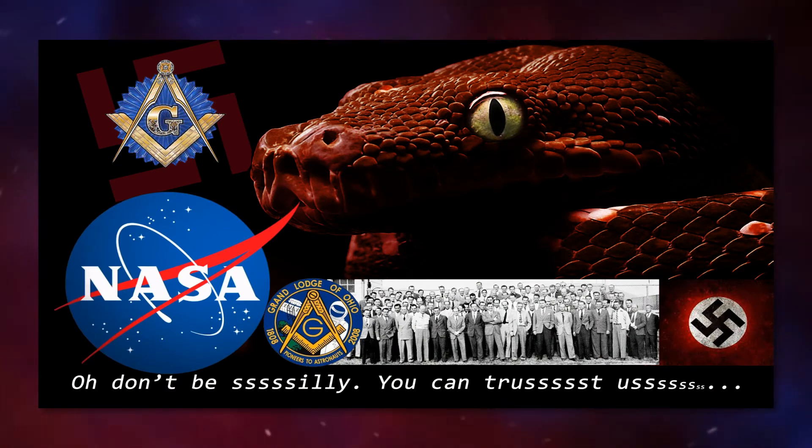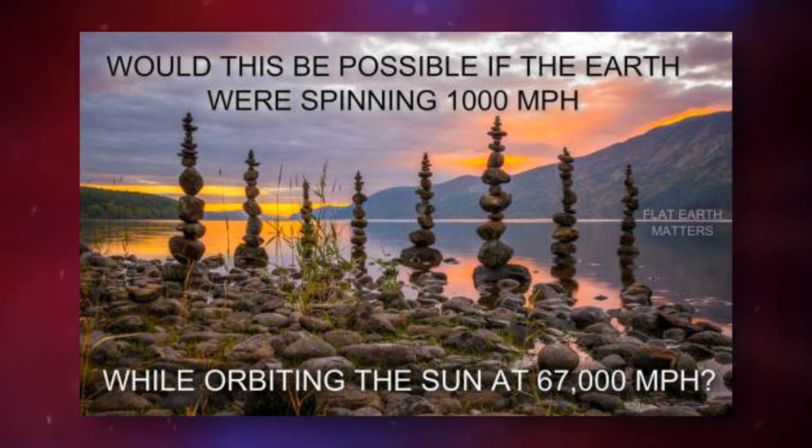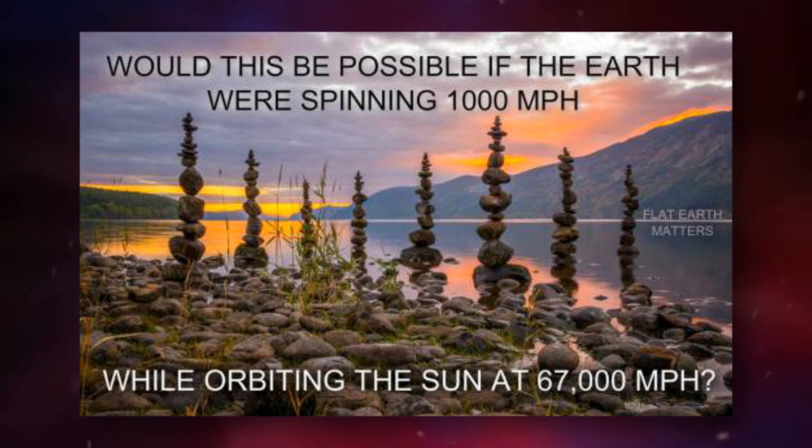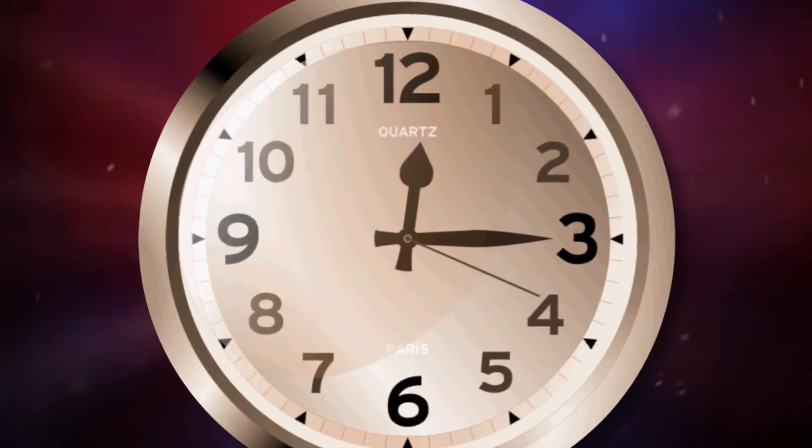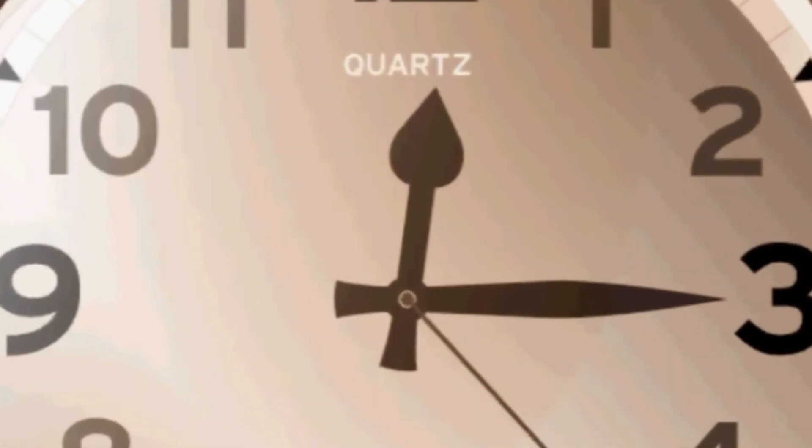I know it's a common mantra in Flat Earth to say that the Earth spins at a thousand miles an hour, which of course sounds really fast. The Earth actually makes one revolution in 24 hours. That's half the speed of the hour hand on a clock.